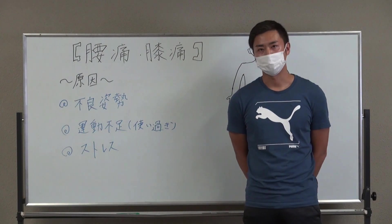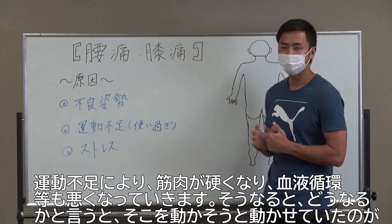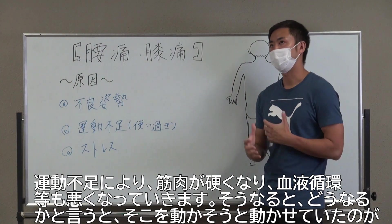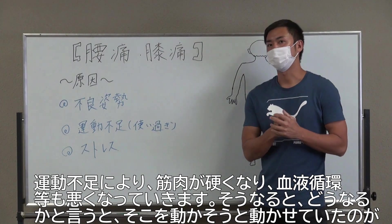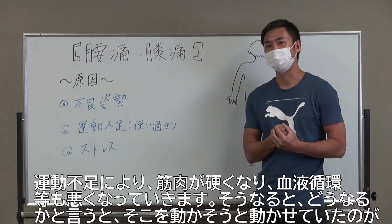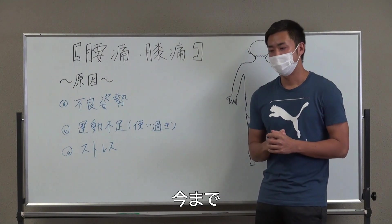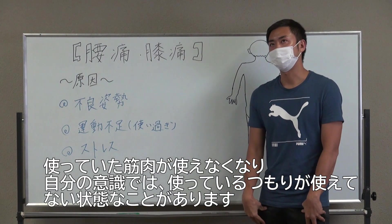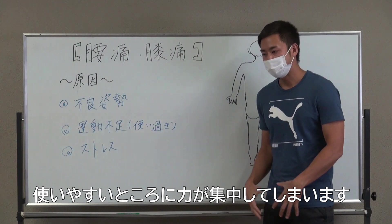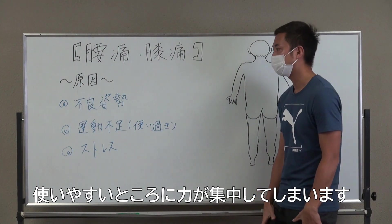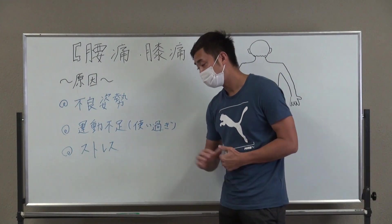もう一つ、二つ目の原因は運動不足ですね。今、結構デスクワークが多いですし、コロナの影響もあって運動をしないでじっとしている機会がすごく多いと思います。そうなってくると、人間の体は使ってなんぼなので、筋肉が使わないとどんどん固くなって血液の循環も悪くなります。そうなると今まで動かせていたことが脳からの指令が行きづらくなりますので、一番使いやすいところに全部力が集中して、それが原因で腰や膝が痛くなるというケースがすごく多いです。